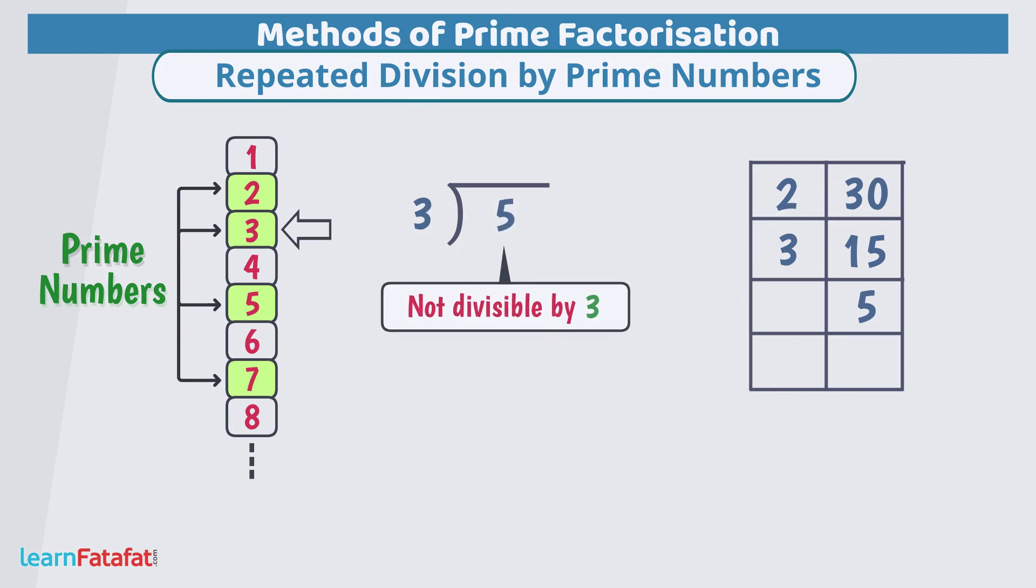Check if we can divide the number 5 by 3. No, we can't. So, select next prime number 5. We will select 5 but not 4 because we want prime factors. 4 is not a prime number so we will not select it. Taking 5 as the next prime number, we will divide 5 so that quotient is 1.